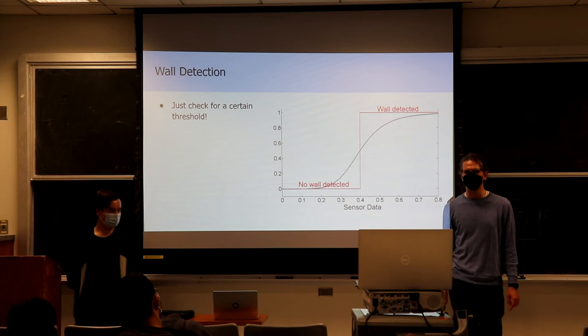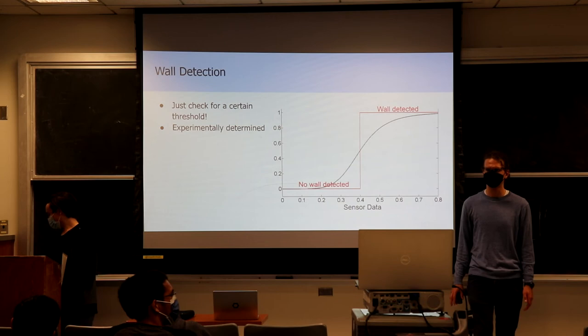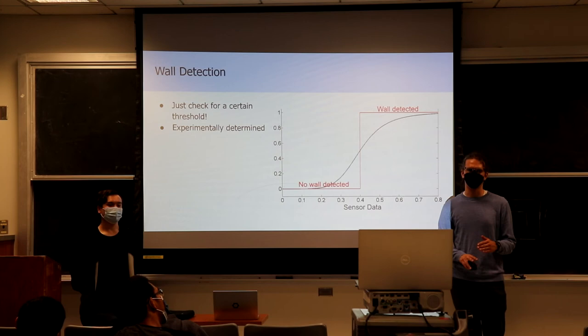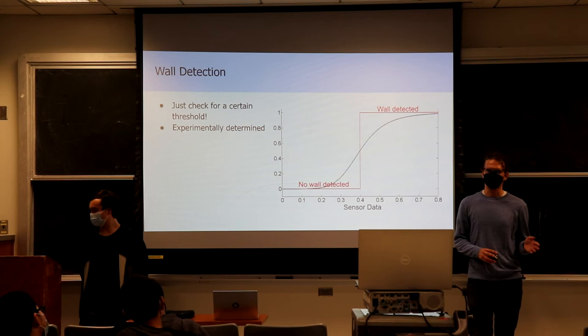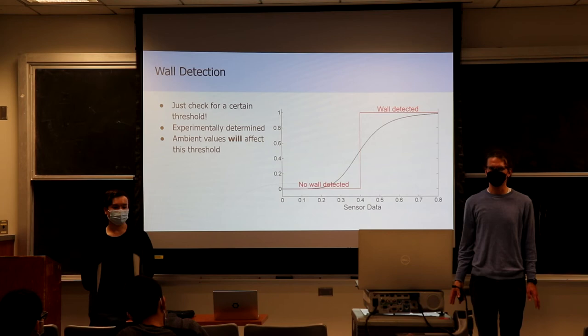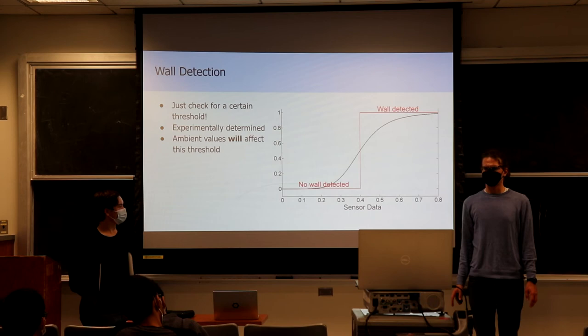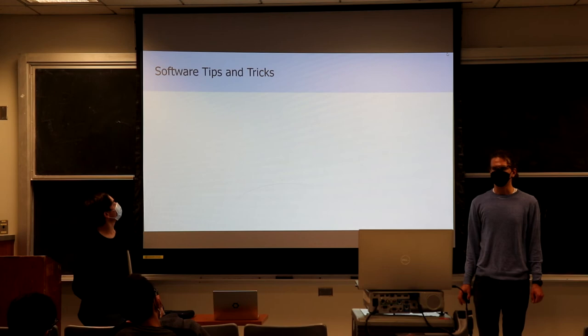To actually detect a wall, you can just check for a certain threshold, which you'll have to experimentally determine. Place your mouse in the maze next to a wall and look at that value, or not next to a wall and look at that value — there should be a threshold in the middle where you can decide whether there's a wall there. There will be some change due to ambient light — if the maze is near a window it could behave differently than if it's in the back of the lab. But you'll probably be testing all in the same place, so it shouldn't be too much of an issue.